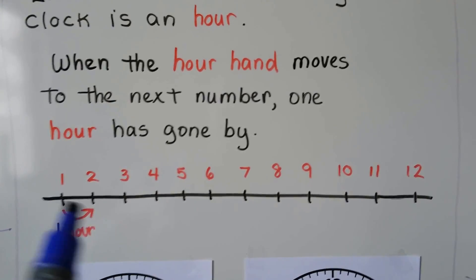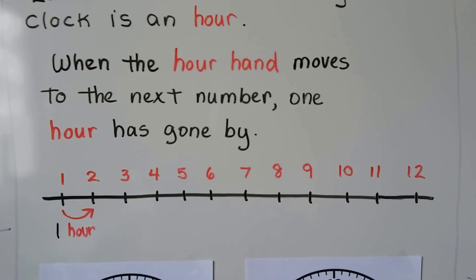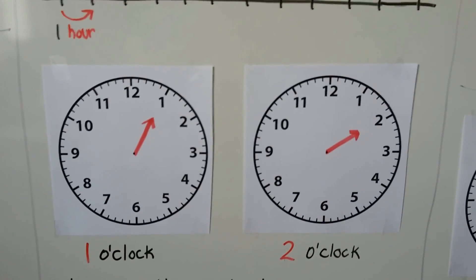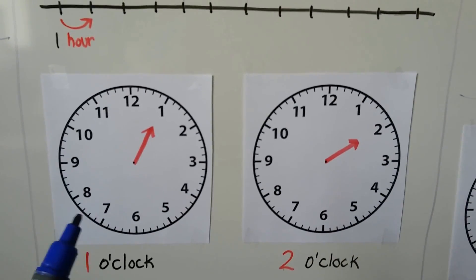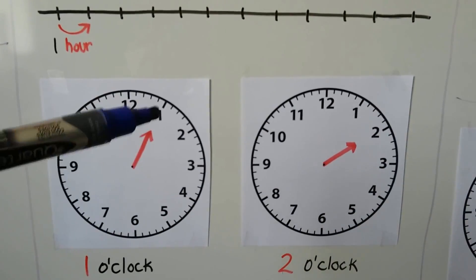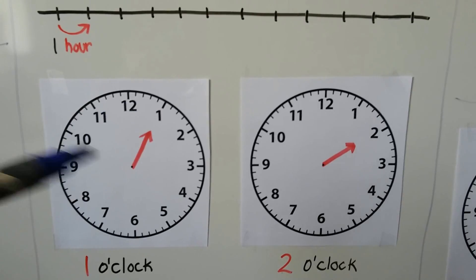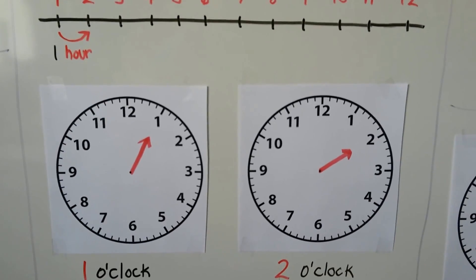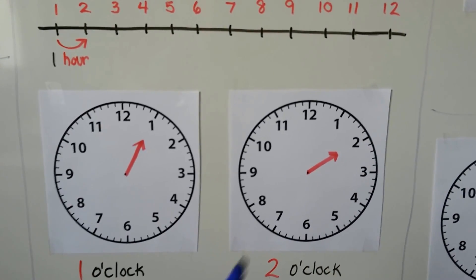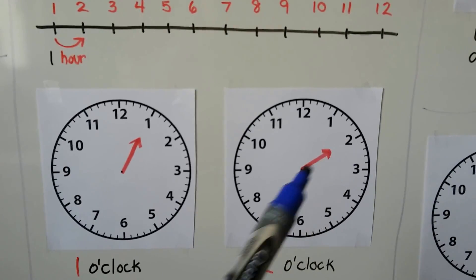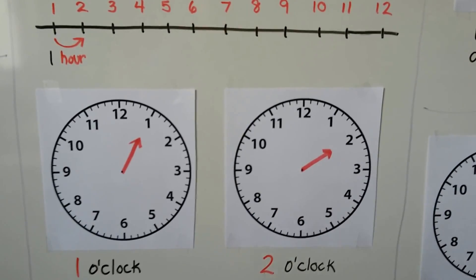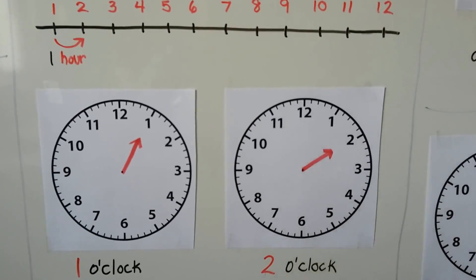In between each number is one hour. This clock is showing one o'clock — the hour hand is pointing to the one. When it moves to the next hour, it's two o'clock. It moves to the next number, just like it did on the number line.